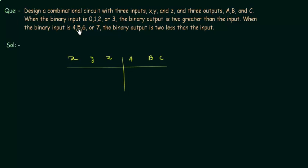Now let's see what it says. When the binary input is 0, 1, 2 or 3, it means 0, 0, 0; 0, 0, 1; 0, 1, 0; or 0, 1, 1. This is the binary input of 0, 1, 2 or 3. The binary output is 2 greater than the input. It means when the input is 0, 0, 0, it is 2 greater. And the 2 greater of 0, 0, 0 is 0, 1, 0. Similarly you have to see for these 3 cases also. And there is one more statement.